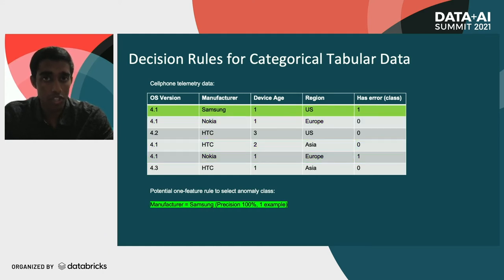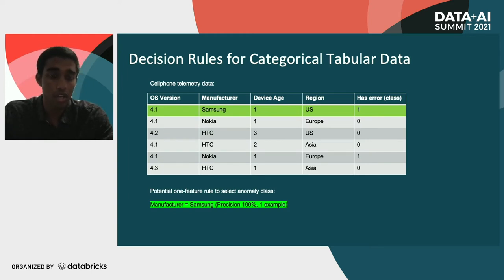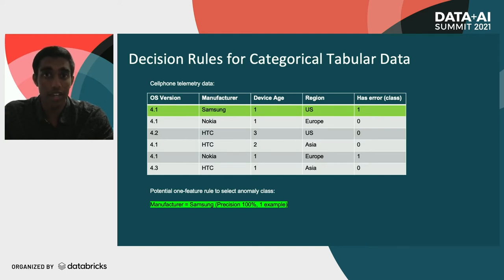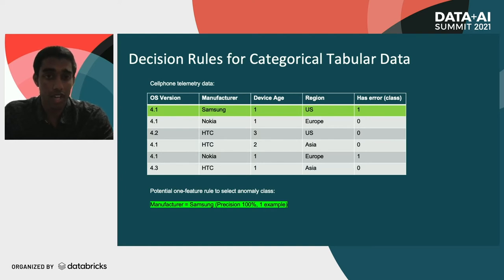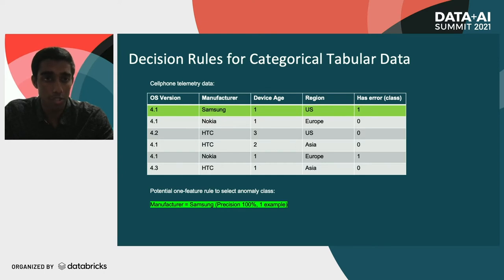A second rule is 'manufacturer equals Samsung', which returns just one row and it turns out that is in fact an error, giving a precision of 100%. We only returned one example, so maybe we don't think this rule generalizes because it's specific to just a single example, but it does give us high precision.